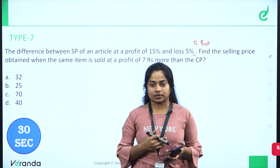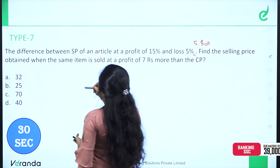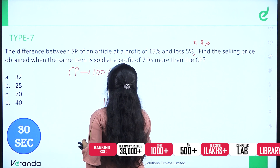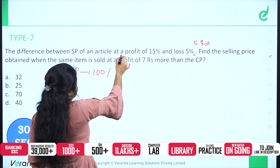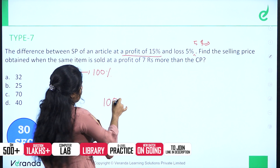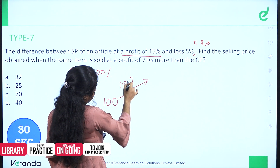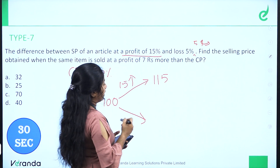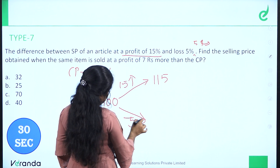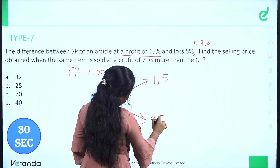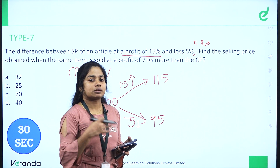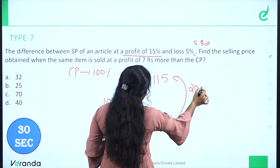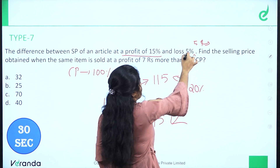If we have the Cost Price, then we have 100% of the Cost Price. We will assume the Cost Price. Now, we have 5% Loss — that gives us 95 units. At 15% profit we get 115 units. The difference gives us 25 rupees.